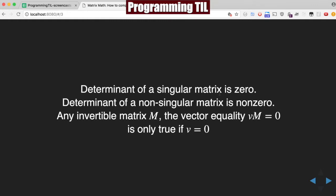Determinants of a singular matrix, so those without an inverse, is zero. Determinant of a non-singular matrix is non-zero. Any invertible matrix M, the vector equality V times M equals zero is only true if the vector is zeros.